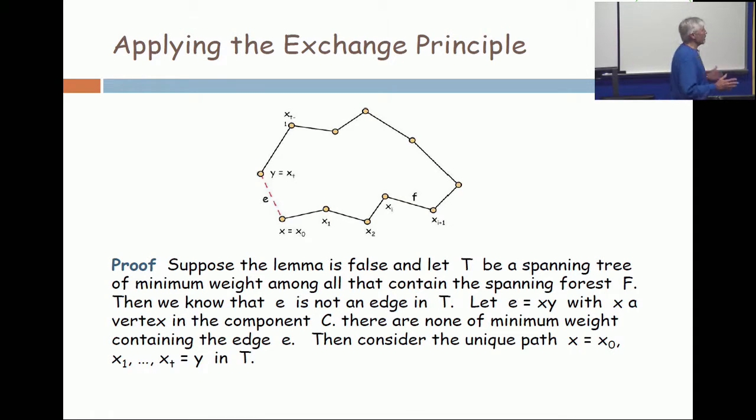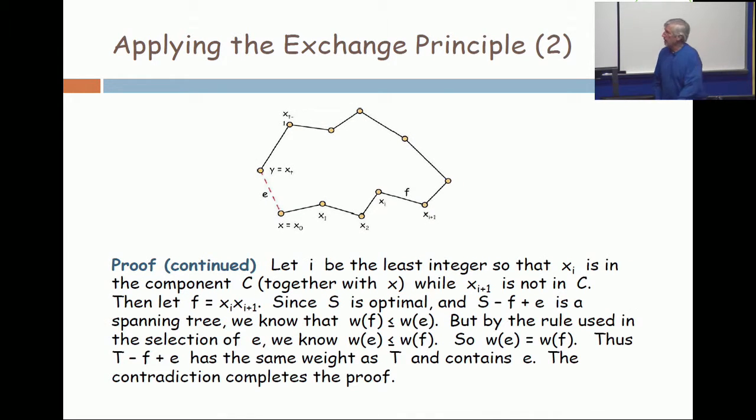Now, since your original tree is optimum, that means that you can't have it improved. So the weight of F is at most the weight of E. If E was lighter, it would be a better tree. So it's not. That tells you that when you're looking at those weights, since I can exchange it, the weight of F is at most the weight of E.